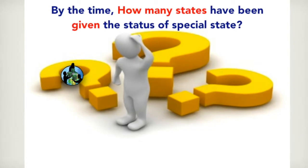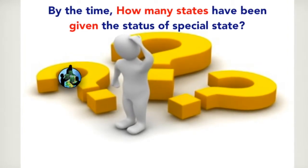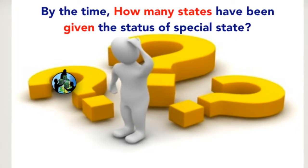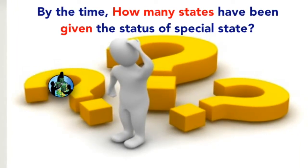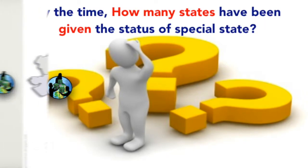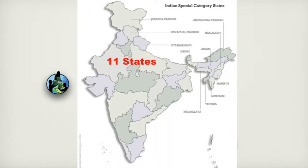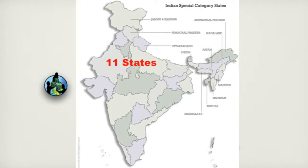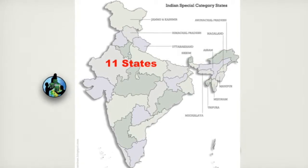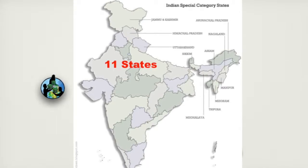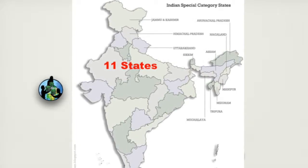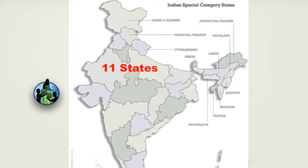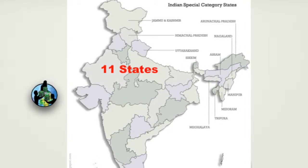Now, you might have the next question: by now, how many states have been given the status of a special state in India? At present, there are 11 states under the category of a special state. Namely, Assam, Nagaland, and Jammu and Kashmir — these three states had been given the status of a special state in the beginning.